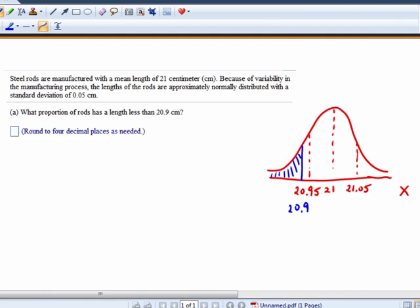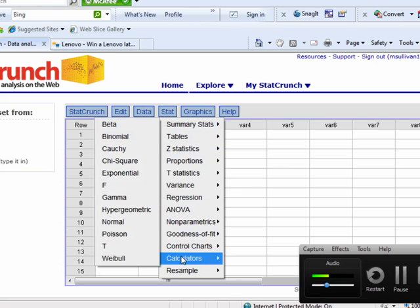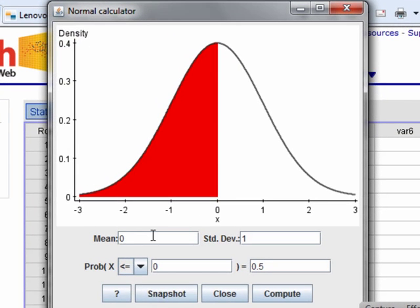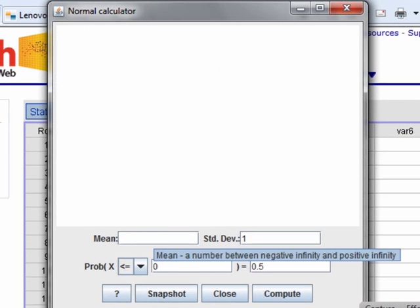Stat calculators, and we want the normal calculator. Our mean was 21 and our standard deviation 0.05.